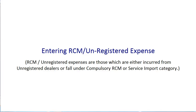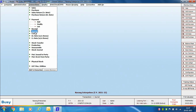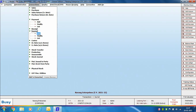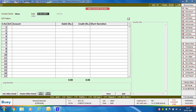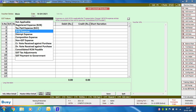Next, we discuss entering RCM Unregistered expenses. These are expenses incurred from unregistered dealers or those that fall under the compulsory RCM or service import category. This includes expenses from dealers not registered under GST, services falling under compulsory RCM, or services taken from a foreign company. We add a journal voucher, specify the series, date, and GST nature as 'RCM Expense'.